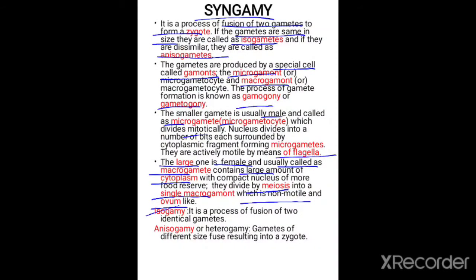Now let us come to isogamy and anisogamy. Isogamy is the process where the fusion of two identical gametes occurs, but in anisogamy or heterogamy there are gametes of different size that fuse, resulting in a zygote. This is about syngamy, in which isogamy and anisogamy occur.